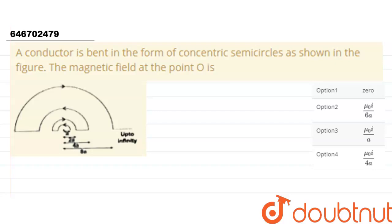We are given that a conductor is bent in the form of concentric semicircles as shown in the figure. The magnetic field at point O is what we need to find. Where is point O? Point O is this center here, we can see.